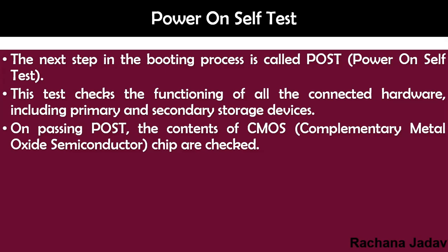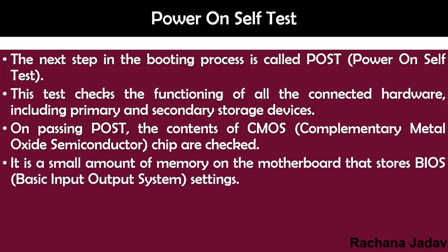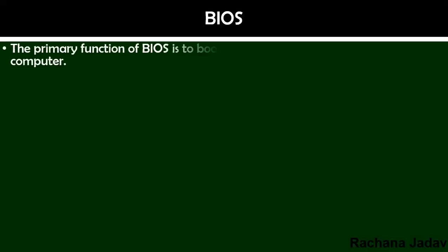On passing the POST, the contents of the CMOS — that is, the Complementary Metal Oxide Semiconductor chip — are checked. This chip is inside the CPU. Everything including RAM and ROM is being checked there. The motherboard also has a small amount of memory that stores the BIOS — Basic Input Output System — settings.